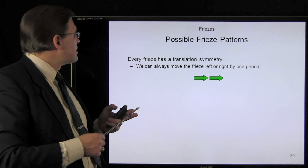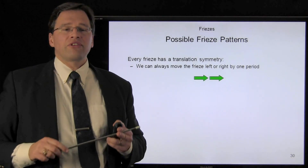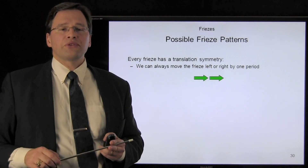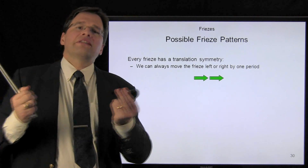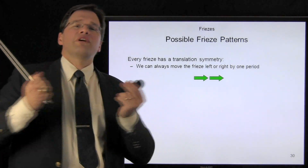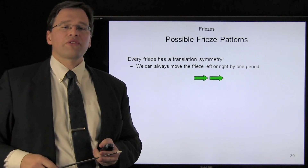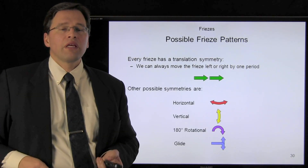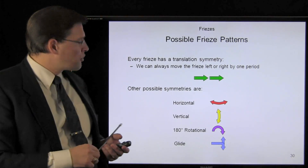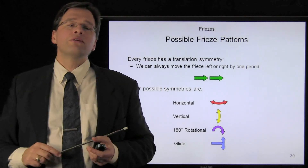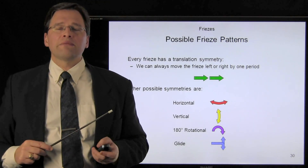Every single frieze must have translational symmetry — you can always take the frieze and move it one period to the left or to the right. Other possible symmetries are horizontal symmetry, vertical symmetry, rotational symmetry, or glide symmetry.